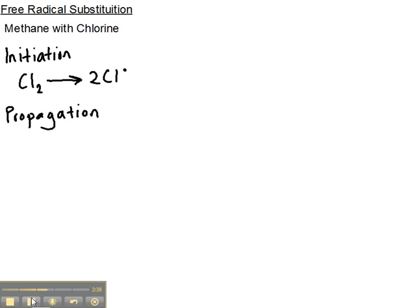Following on from the initiation step we have a step known as propagation. When reacting the chlorine free radical with methane, I'm going to start off by showing this as displayed formula and then the equation beneath it. So methane has the formula CH4, that's carbon with four hydrogens and we're reacting that with a chlorine free radical. Remember when representing chlorine free radical to place a dot next to it to indicate that it's a free radical.